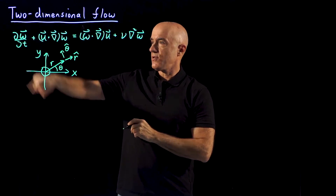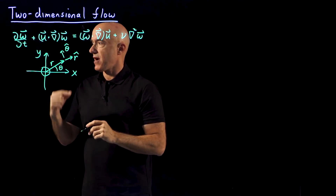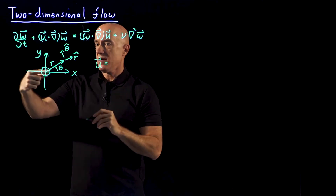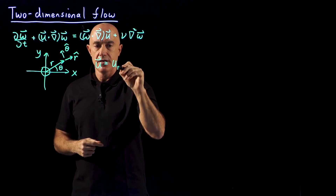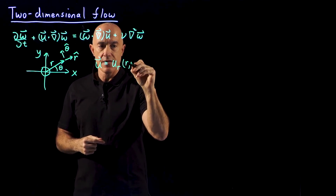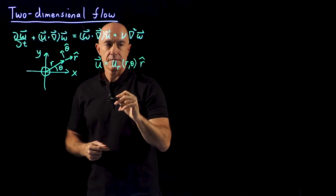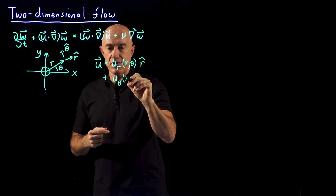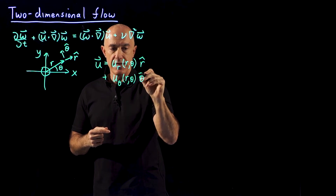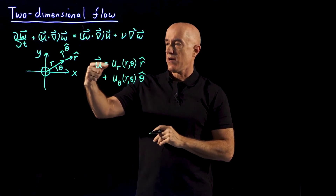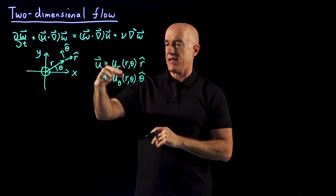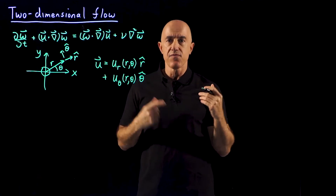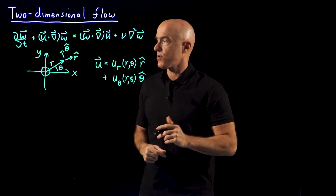We have a two-dimensional problem, and I want to write that problem in polar coordinates. Our velocity field then has a component in the r direction, u sub r of (r, theta) in the r hat direction, plus a component in the theta direction, u sub theta of (r, theta), in the theta hat direction. So our velocity field in polar coordinates has two components: u sub r and u sub theta.